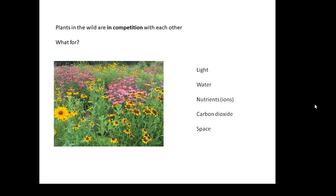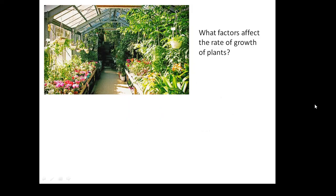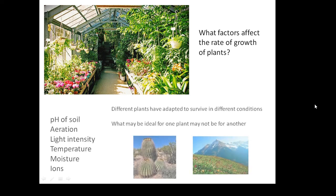What factors will affect the rate of growth of plants — how quickly plants grow? Different plants have adapted to survive in different conditions. If we're talking a cactus, or a plant that lives on a hill at high altitude where it's a lot colder, what might be ideal for one plant may not be for another.